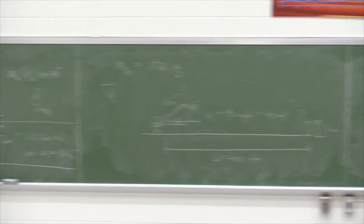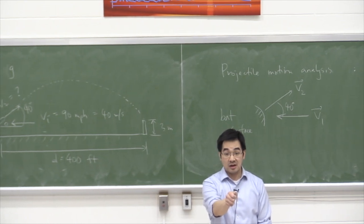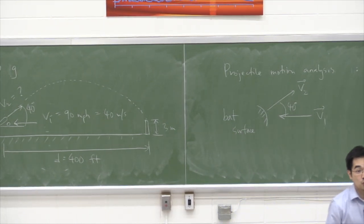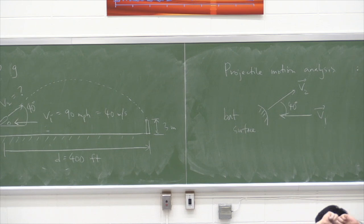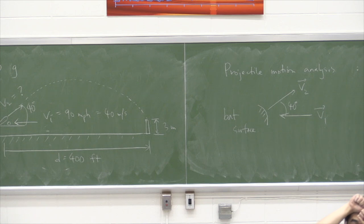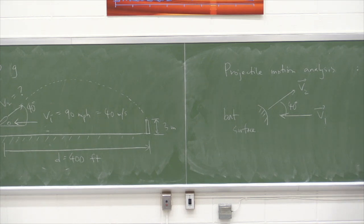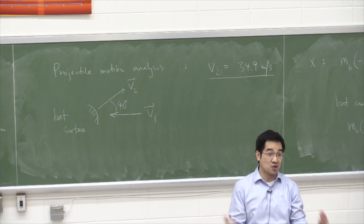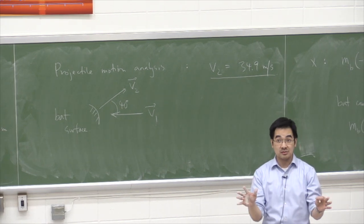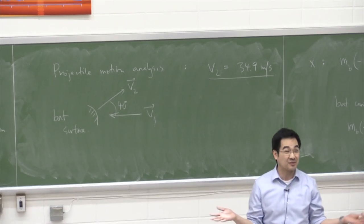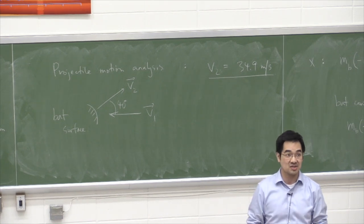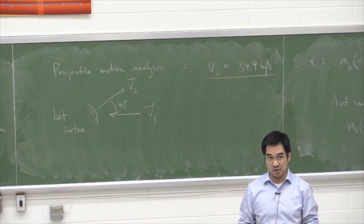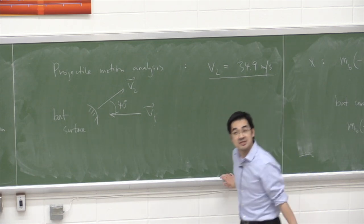That's a lot of information. There's one more section to cover on Friday. To clarify: the assumptions in example 3 — fence height, distance, pitch speed, exit angle — were given to illustrate a real-world open-ended problem. On an exam, we'll provide all required values. The 90 mph pitch converting to 40 m/s and all other numbers would be given to you. See you Friday.